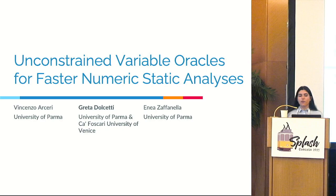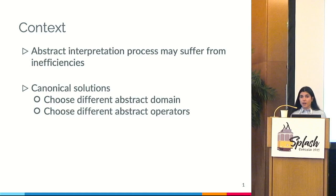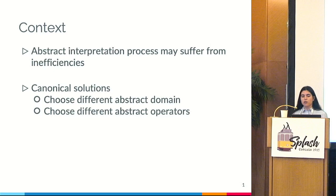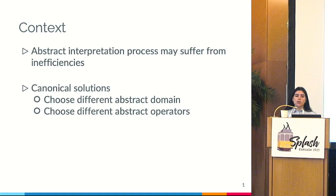We are in the context of static analysis by abstract interpretation. As we know, the abstract interpretation process may suffer some inefficiencies. There are many ways to tackle these: some canonical solutions are choosing a different abstract domain — for example, going from polyhedra to octagons, being faster but losing some precision — or choosing different implementations of abstract operators inside our domain of choice to be more efficient.